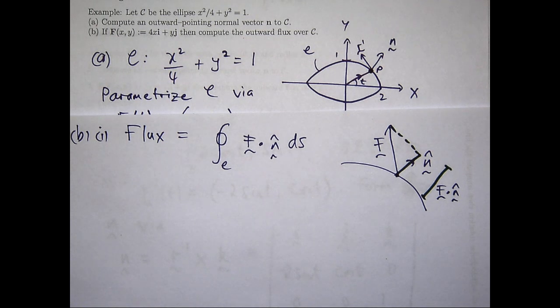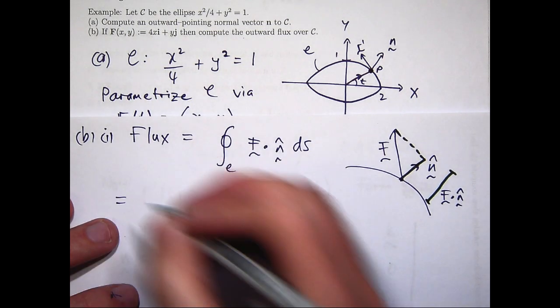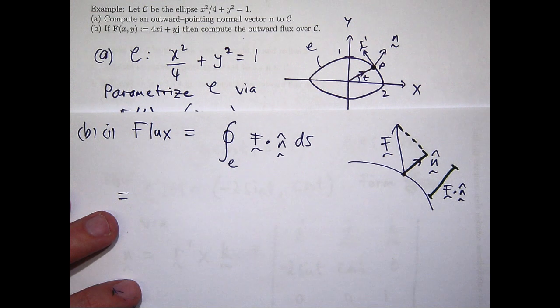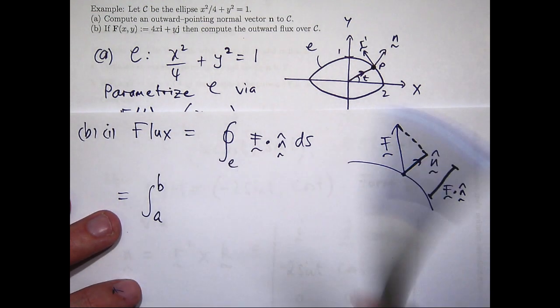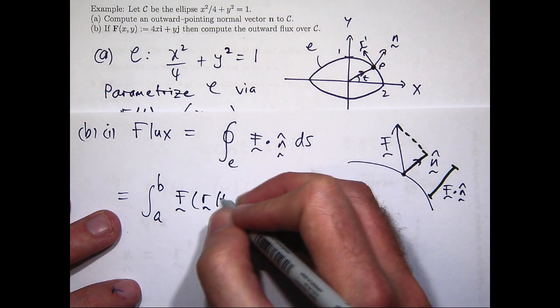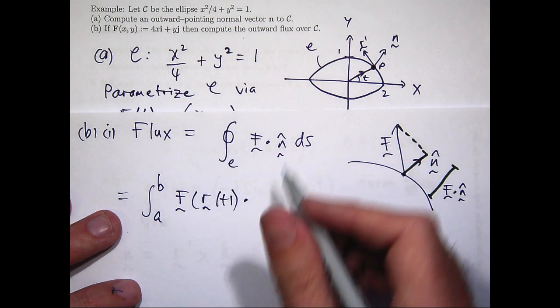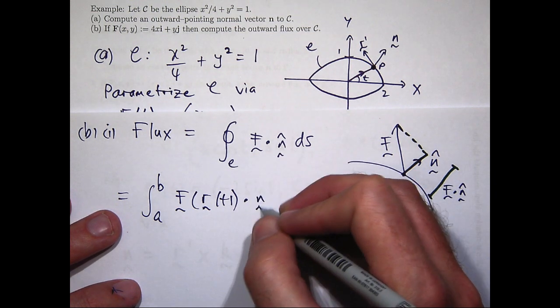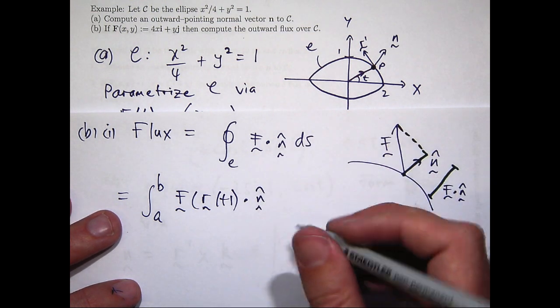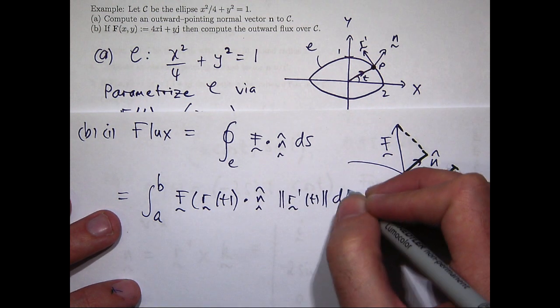So what this says is that the outward flux is just this length integrated around the curve C with respect to the arc length. So how do we compute that? Well, there's a number of ways of doing that. So let me just show you the first way. Essentially, we've parameterized our curve and we can replace ds with the magnitude of this dt.